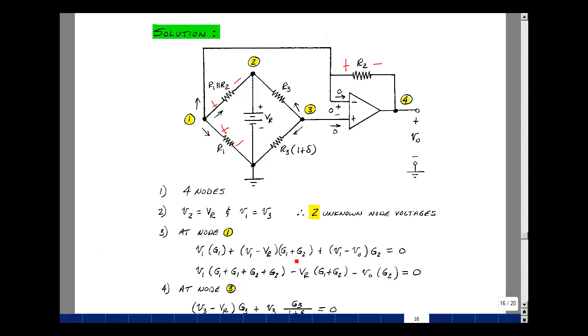All things that multiply V sub R here are G1 plus G2, but there's a minus sign. And likewise, the things that multiply V out, I've got a minus sign, that's just G2. So I have one equation in my two unknowns, V1 and V out.